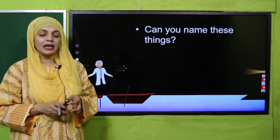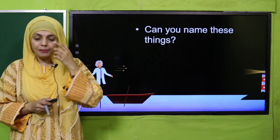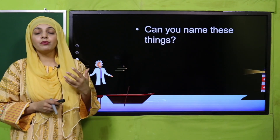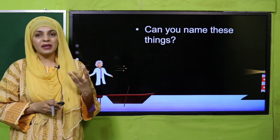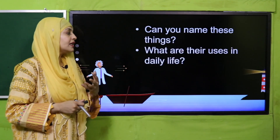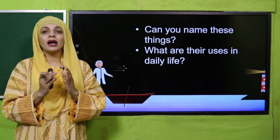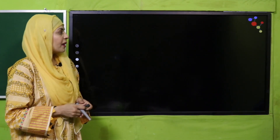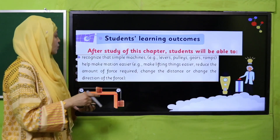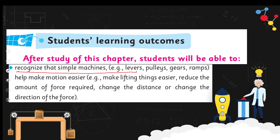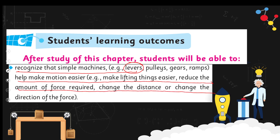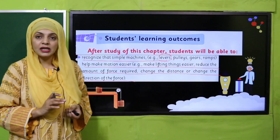Can you name these things? Have you seen these simple machines before? A ramp, a pulley — these are some very basic simple machines that make our work easy. In today's lecture, students will be able to recognize that simple machines like levers help make motion easier — for example, making lifting things easier, reducing the amount of force required, or changing the distance or direction of the force.